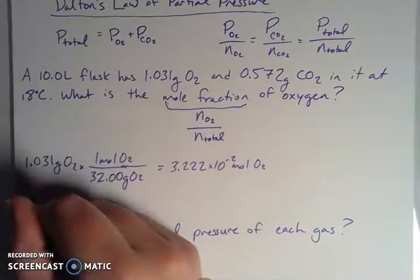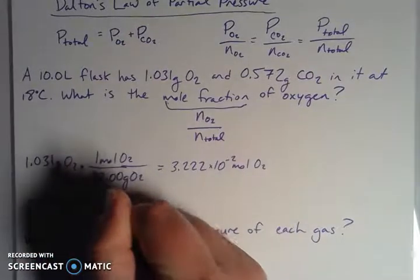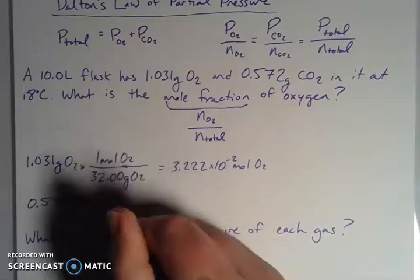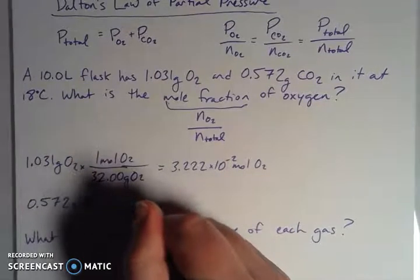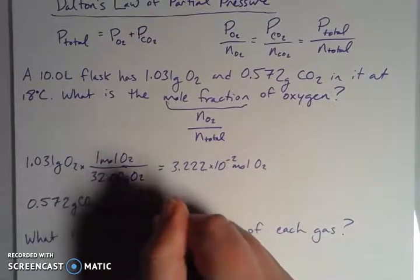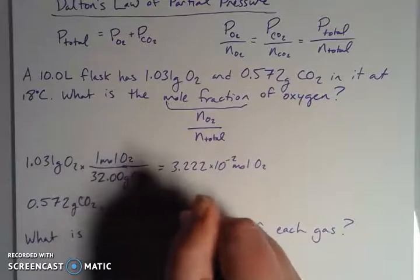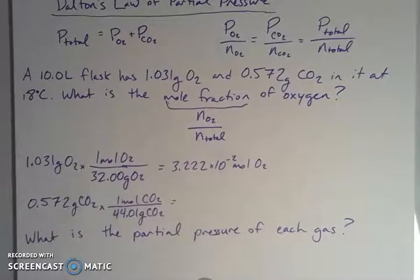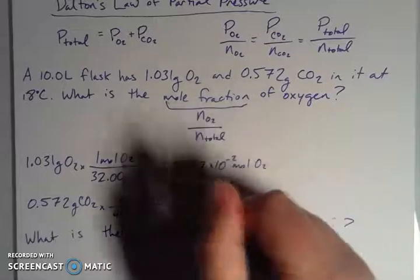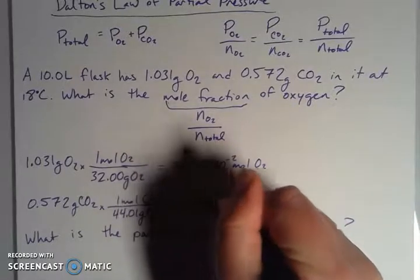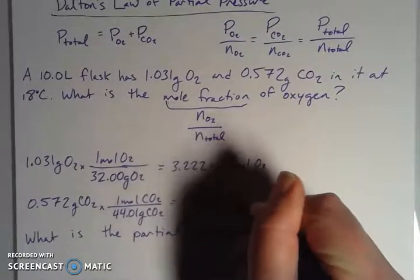And then I can do the same operation with my carbon dioxide. So I have less carbon dioxide and my molar mass is greater, 44.01 grams for every one mole of CO2. So I'm expecting this to be a smaller number. Which when I plug that in, I end up with 1.30 times 10 to the negative 2 moles.